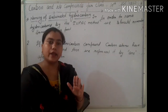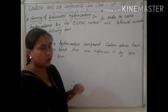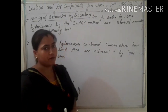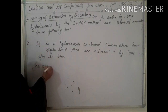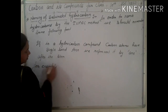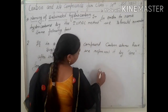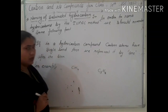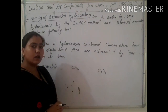If carbon atoms have single bonds in a hydrocarbon compound, then we add '-ane' after the stem. For example, consider CH4 and C3H8 — how can we write the IUPAC name of these compounds?